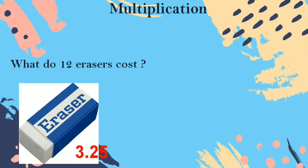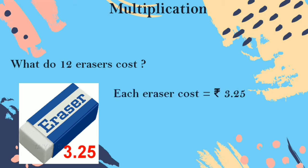The first question is: what do 12 erasers cost? You are going to find out. Each eraser cost is 3 rupees 25 paise. One eraser cost is given, so you are going to do the multiplication. Each eraser cost is 3 rupees 25 paise.